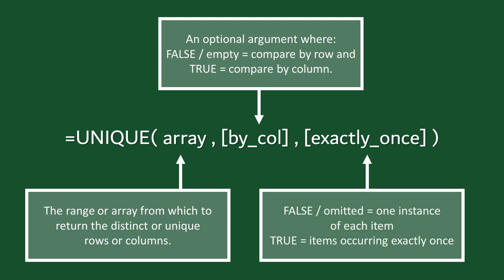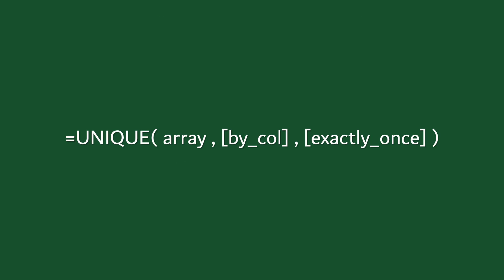The exactly_once argument depends on your interpretation of the word 'unique.' If you want a list that includes only items that appear once, then use true. If you want a list that contains one instance of each item — i.e. a distinct list — then use false. This is an optional argument and defaults to false, which is probably the option we want most of the time. We'll see the impact of this in example one.